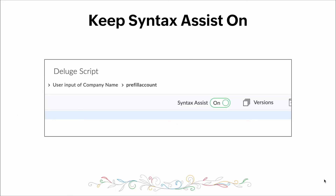So we'll start with Syntax Assist — what is it and how can it help us? Within our Deluge editor, we get a feature called Syntax Assist. Working with different scripting languages, it can be confusing and hard to keep track of syntax and how to properly write code. With Syntax Assist, the editor allows us to make fewer mistakes by providing suggestions as we write our code. Keeping Syntax Assist on can be very productive as it will help you not make so many mistakes while helping you remember syntax. Keeping it on is always a good idea.